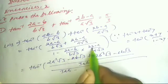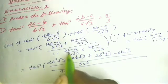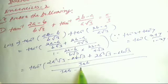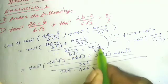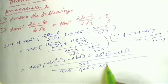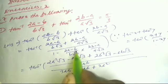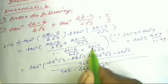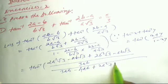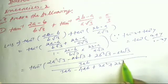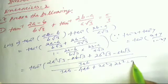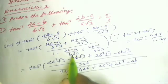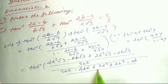For the denominator: 1 minus (2a−b)(2b−a)/(3ab). Expanding (2a−b)(2b−a): 4ab − 2a² − 2b² + ab = 5ab − 2a² − 2b². So the denominator becomes 3ab − (5ab − 2a² − 2b²) = 2a² + 2b² − 2ab, divided by 3ab.